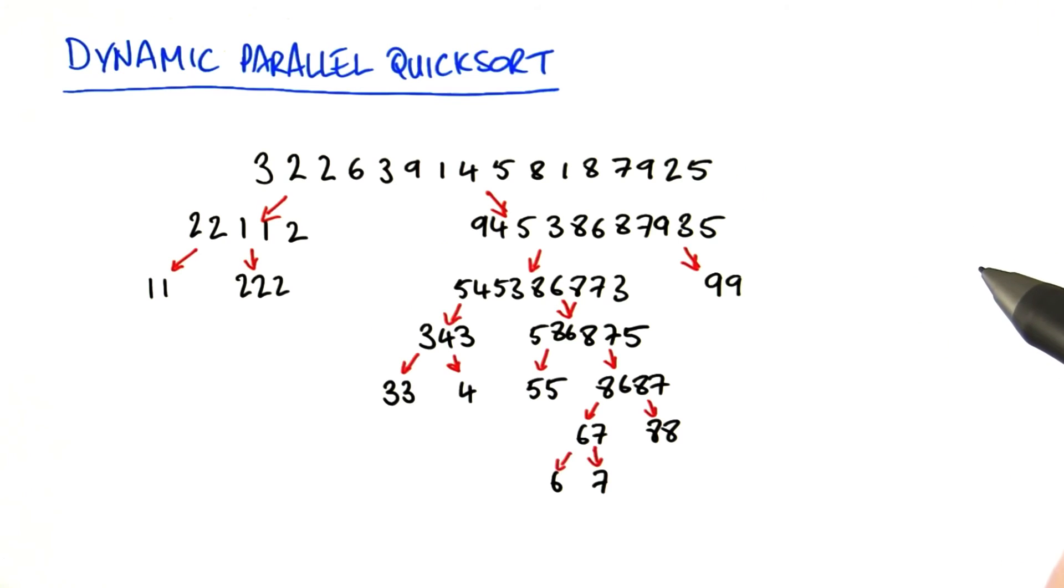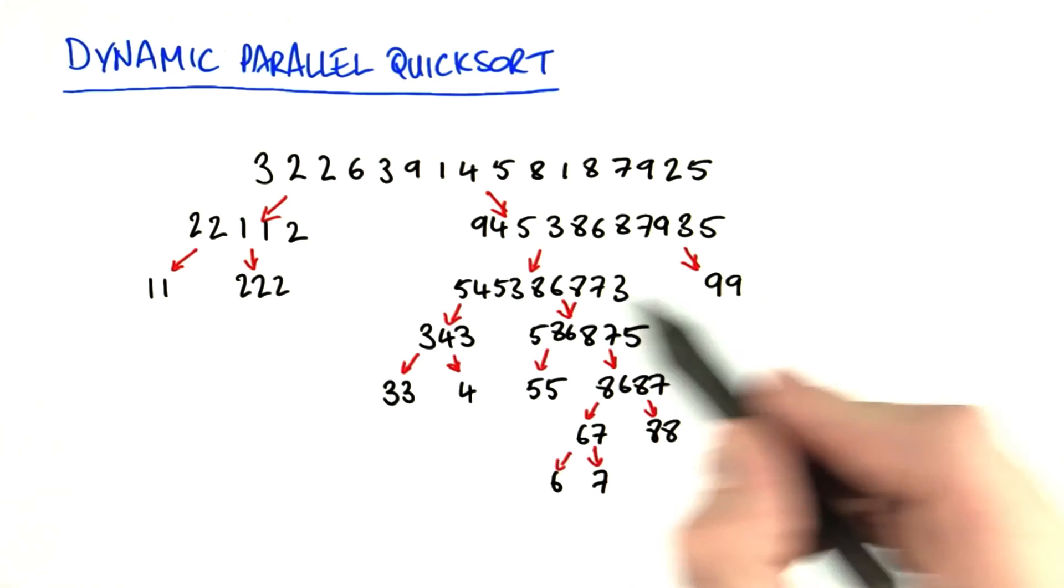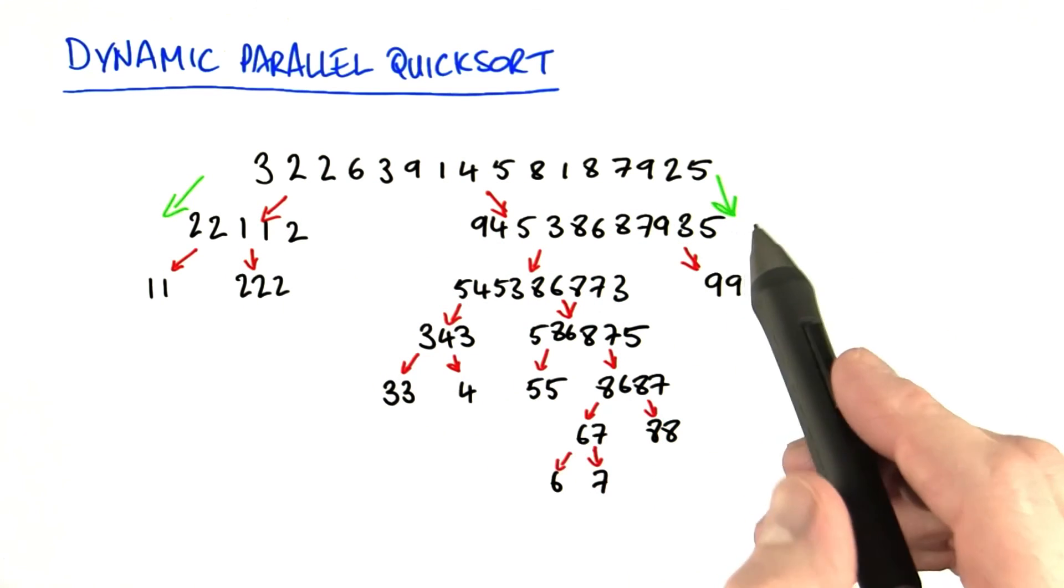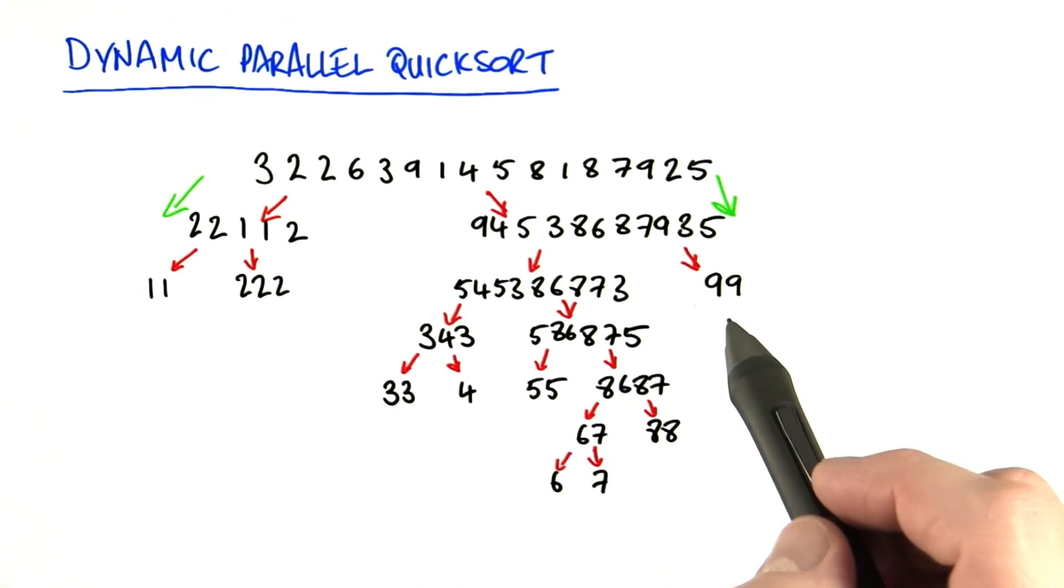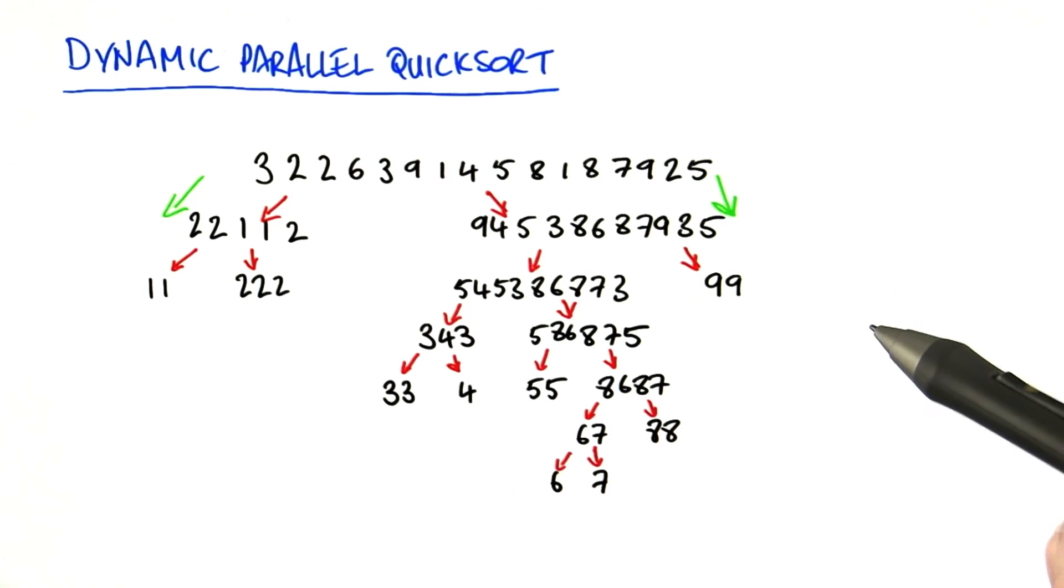So by launching the sort into different streams, we run both the left and right sorts in parallel. So I would run both of these together, and then each of their children, and so on, and I'd get the parallel performance I'm looking for.